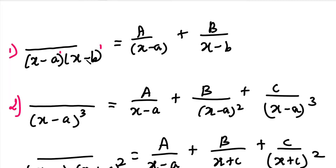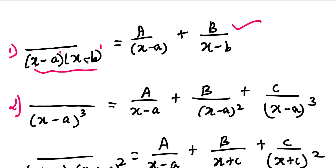The formula for a linear factor denominator is: one constant in the numerator — A divided by the first factor plus B divided by the second factor. If the denominator has two factors, we get two terms. If the denominator has three factors, we get three terms: plus C divided by the third factor.